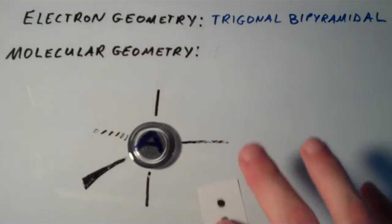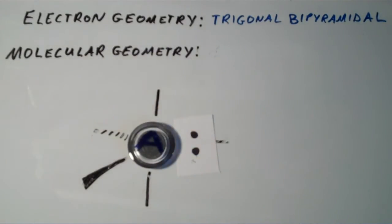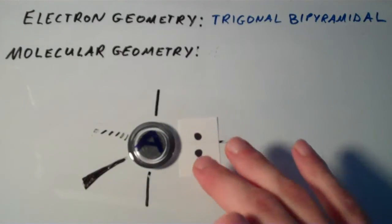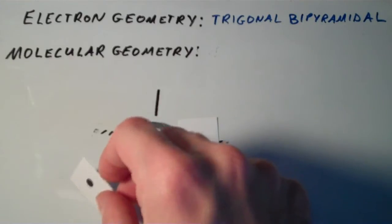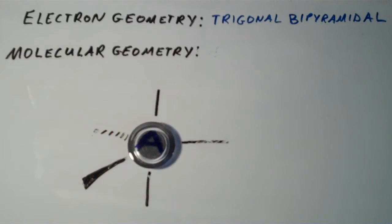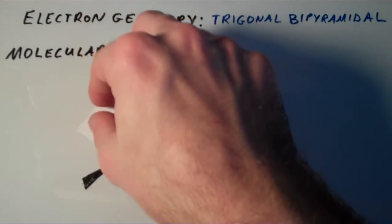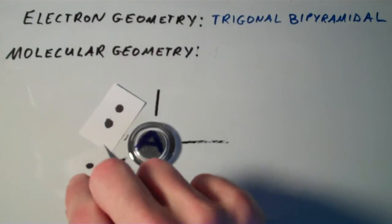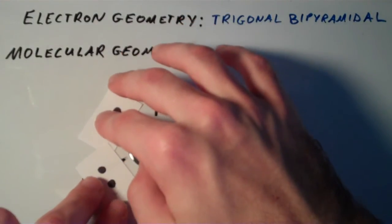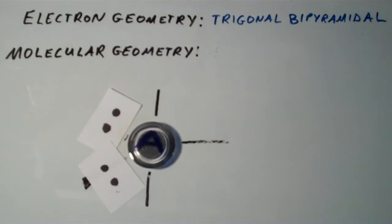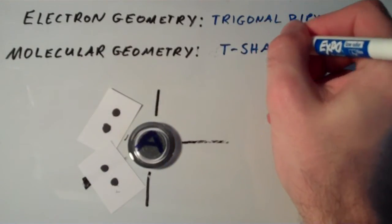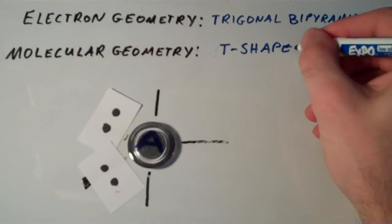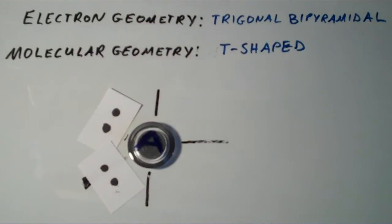If we have two lone pairs, well, the second lone pair is also going to occupy an equatorial position for the same reason that the first one did. So I'm going to put them here and here. It might be an easier way of looking at it. This shape is what we call T-shaped. Five electron groups, two of them are lone pairs.